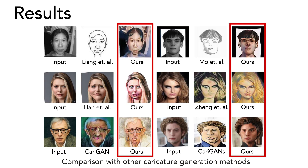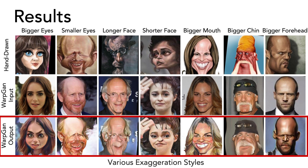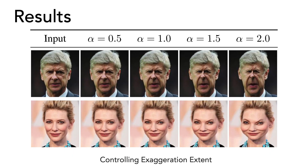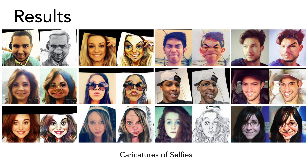Here we compare WarpGAN to other caricature generation methods. We find that WarpGAN not only well preserves the identity but also generates aesthetically pleasing caricatures with proper exaggerations. WarpGAN also allows the user to control the extent of exaggeration by scaling the displacement of the control points. WarpGAN not only works great for celebrity photos but also works extremely well for personal selfies.